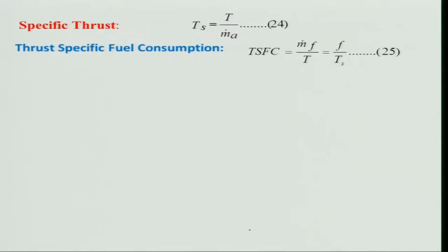TSFC is defined as the amount of fuel consumed (mass flow rate) per unit thrust produced. This is different from what we use for automobiles — where we talk about mileage or kilometers per liter of fuel, which is more relevant as fuel prices rise. There is also another important parameter not commonly considered by users: emissions — how badly the engine pollutes the atmosphere.